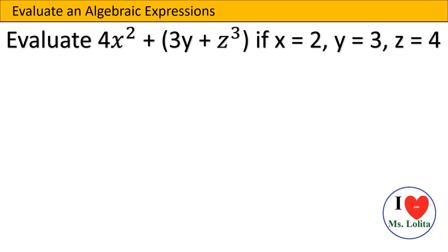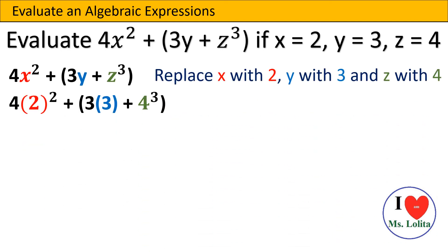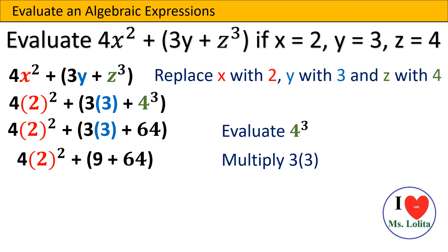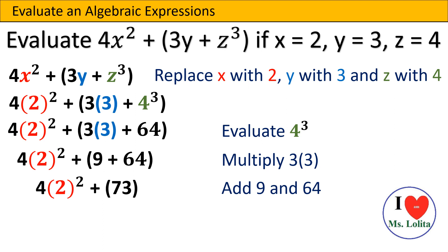Let us work on another example. Evaluate 4x squared plus open parenthesis 3y plus z cubed close parenthesis, if x is equal to 2, y is equal to 3, and z is equal to 4. We replace x with 2, y with 3, and z with 4, giving us 4 times 2 squared plus open parenthesis 3 times 3 plus 4 cubed close parenthesis. We evaluate 4 cubed, which gives us 64. Then we multiply 3 by 3 inside the parenthesis — 3 times 3 gives us 9. Then we add 9 and 64, which gives us 73.